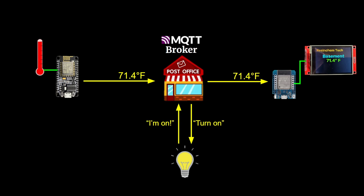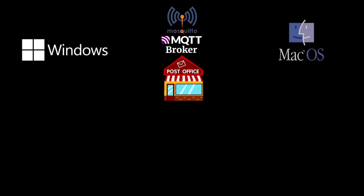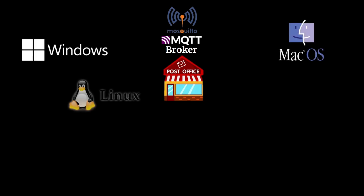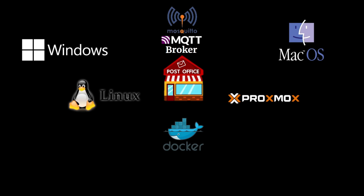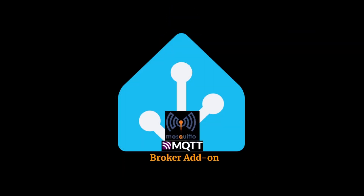There are many flavors of brokers, but Mosquitto is one of the most common — it is free and open source. It can be run under Windows, Mac OS, Linux, in a VM, or in a Docker container. It can run on something as small as a Raspberry Pi, or really any machine that can remain on and is ideally connected via Ethernet to your network. In fact, Home Assistant can also be your broker, completely eliminating the need for a separate machine.